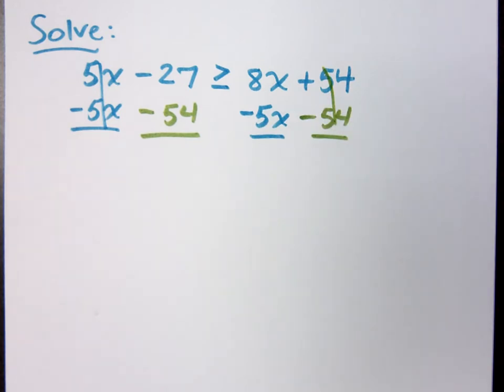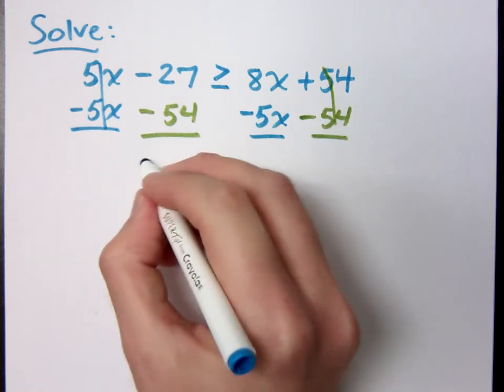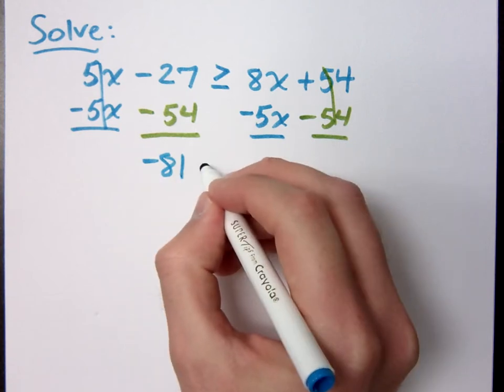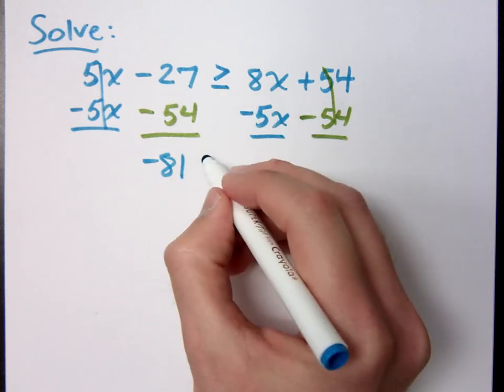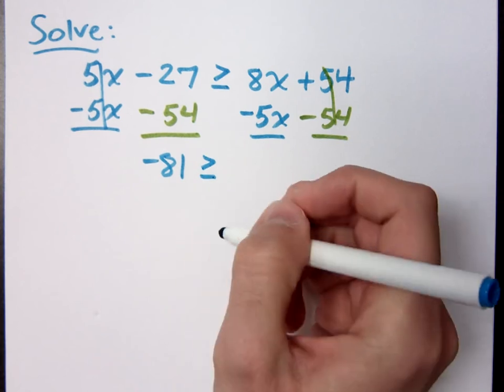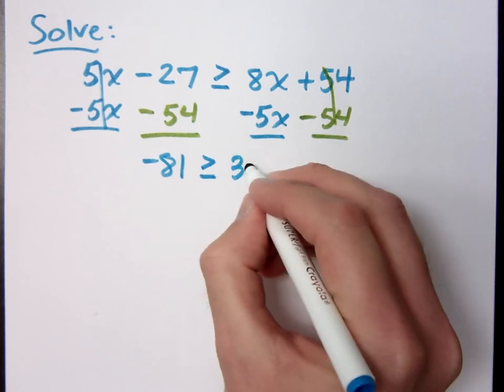What is my inequality now? Negative 81. Well, the inequality symbol has not changed because I was just adding and subtracting stuff. That's cool. Greater than or equal to 3x, right?